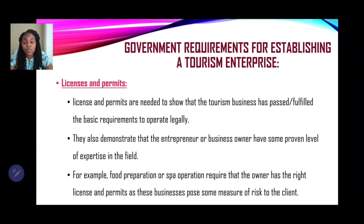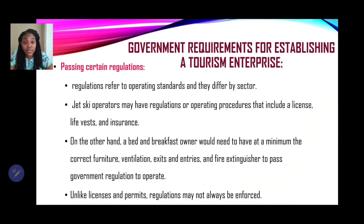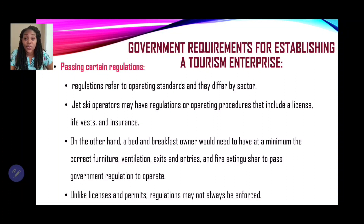As it relates to regulations — these refer to operating standards and they differ by sector. A jet ski operator may have regulations that include a license, a life vest, and insurance. On the other hand, a bed and breakfast owner would need correct furniture, ventilation, exit and entry signs, and a fire extinguisher to pass government regulations to operate. Unlike licenses and permits, regulations may not always be enforced.